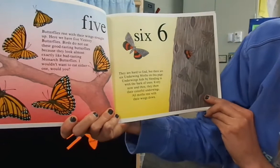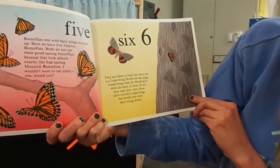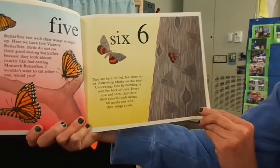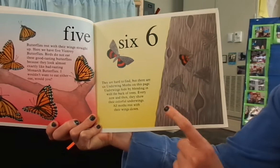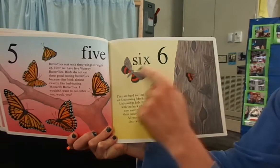They are hard to find, but there are six underwing moths on this page. Underwing moths hide by blending in with the bark of trees, but every now and then they show their colorful underwings. All moths rest with their wings down. One, two, three, four, five, six.